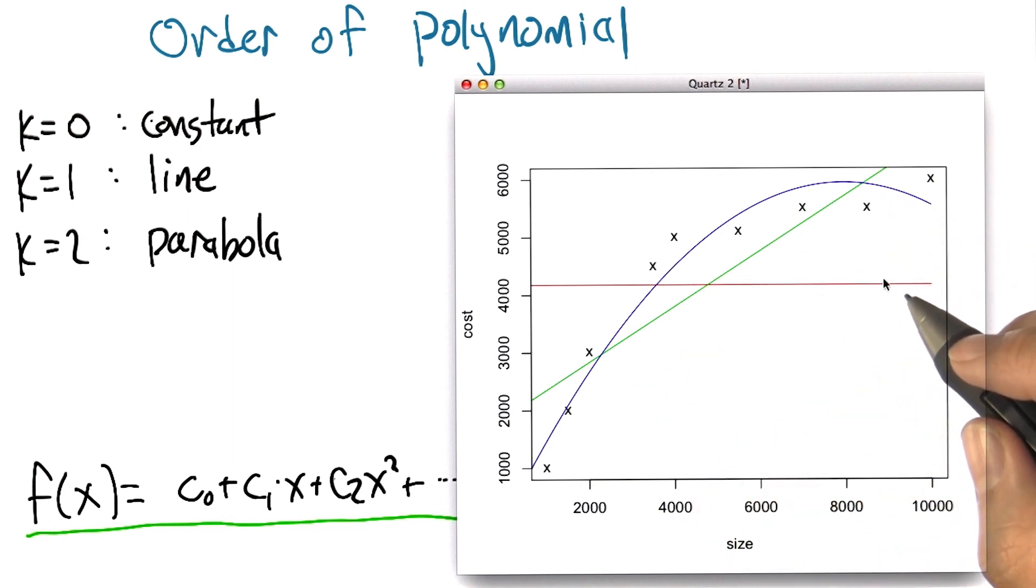Well, if the only thing we care about is minimizing the sum of squared error, my guess is that the parabola has less squared error. Yeah, it has more degrees of freedom, and so,